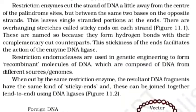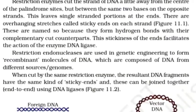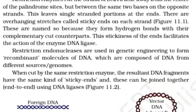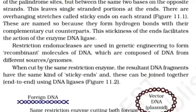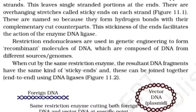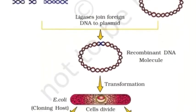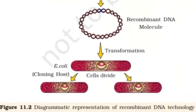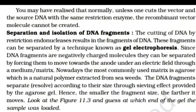The stickiness of the ends facilitates the action of the enzyme DNA ligase. Restriction endonucleases are used in genetic engineering to form recombinant molecules of DNA composed of DNA from different genomes. When cut by the same restriction enzyme, the resultant DNA fragments have the same kind of sticky ends and can be joined together using DNA ligase. One must cut both the vector and the source DNA with the same restriction enzyme; otherwise, the recombinant vector molecule cannot be created.